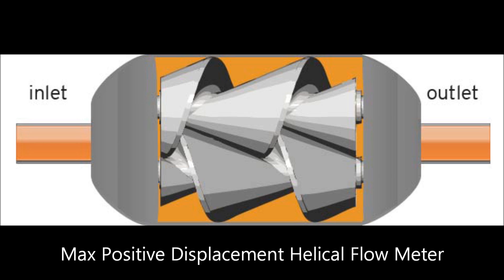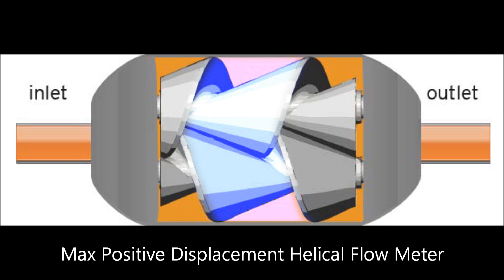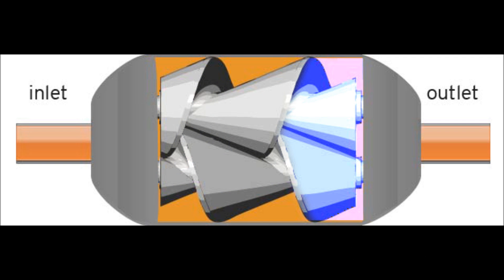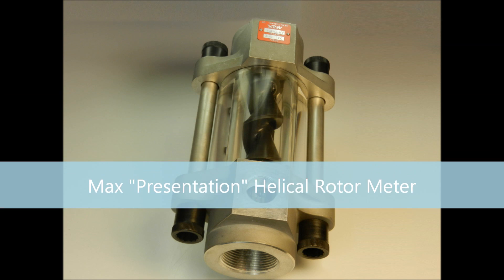Positive displacement flow meters divide a flow stream into fixed, known volumes and count them to determine the total flow and the flow rate.